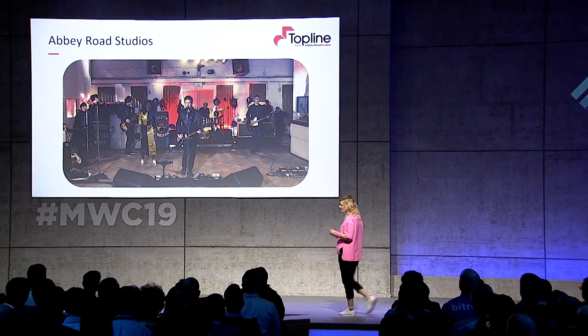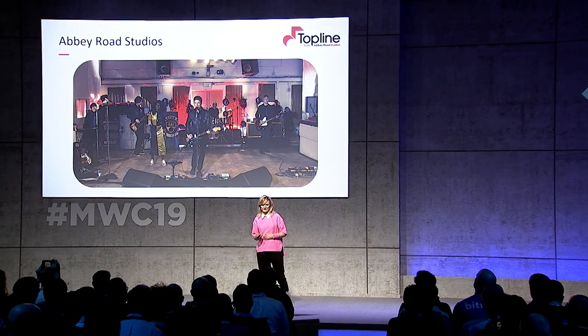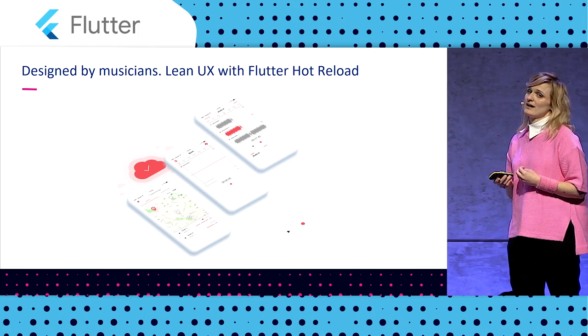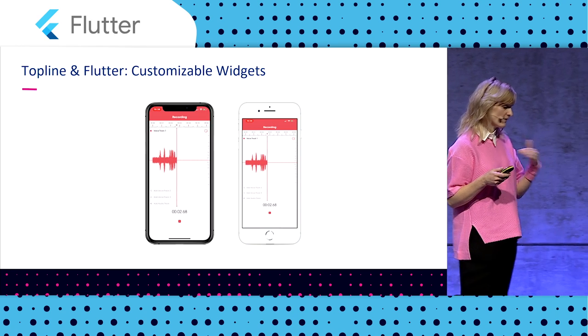Hi, everyone. I'm Dom. I'm head of digital for Abbey Road Studios, presumably the most famous and definitely the oldest recording studio in the world. Today I'd like to talk about how our 87 years of innovation brought us here to build our very first mobile app created with Flutter. We decided to create Topline, the very first songwriting app from Abbey Road Studios. This app allows you to import an instrumental track, sing your vocals on top of it, jot lyrics, share easily with a producer or collaborator, and save it all in the cloud.